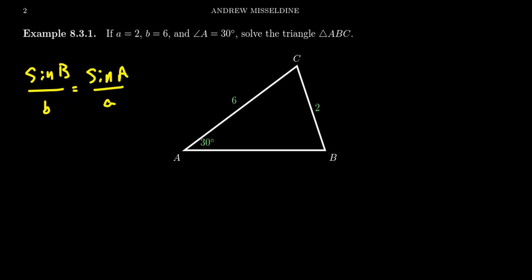And we want to solve for angle B right here. To do that, you can times both sides by little b. So you get sine of B is equal to b over a times sine of A. And then put in the information we have. B is 6, little a is 2, sine of 30 degrees.